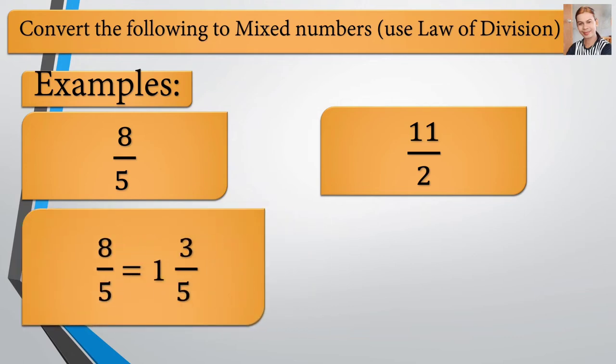There we go. 8 over 5 is equal to 1 and 3 fifths. Kung mapapansin natin dito, kapag dinivide natin yung 8 by 5, meron lang isang 5 na makukuha natin diyan sa 8. Kaya nagkaroon siya ng 1 as a whole number. Tapos, yung excess ng kinuha natin 5 is our remainder, which is 3. And we are going to write the remainder on the upper part or the numerator and rewrite the denominator, which is 5. The correct answer is 1 and 3 fifths.